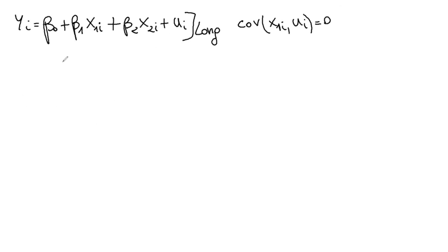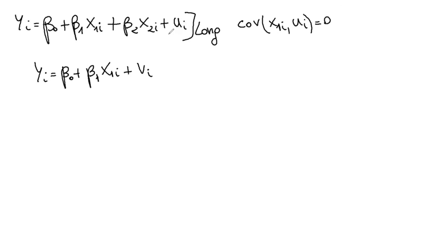But suppose that for some reason — either because we don't have the data or because we're ignorant — we just don't include x2. So instead of running the long regression, we run what we call the short regression, which is y only on x1. We'll call the error term here vi, where vi contains not only ui (the error term from the long regression) but also beta 2 times x2i, because we are omitting x2.